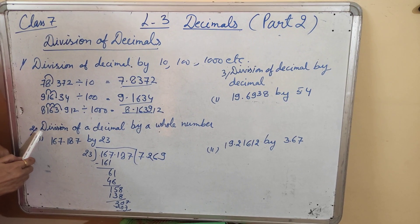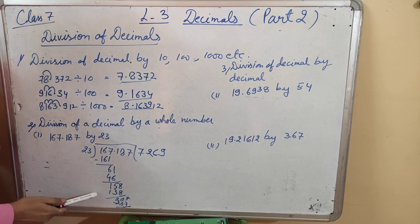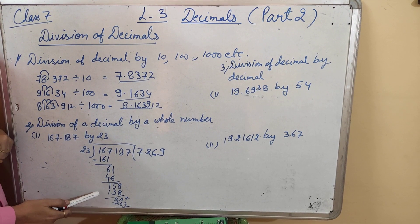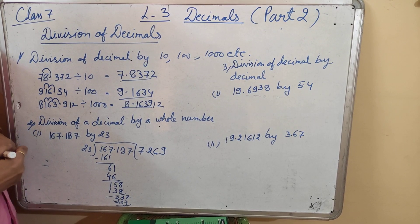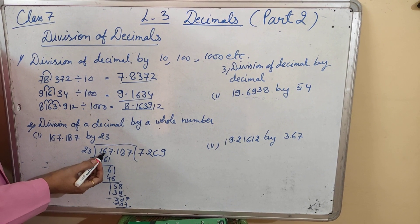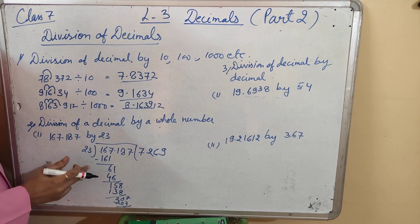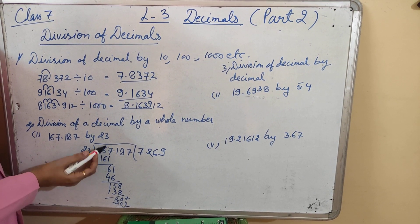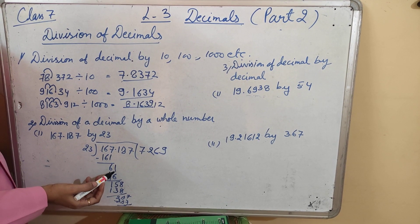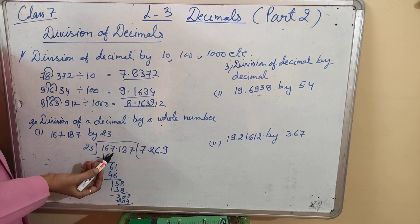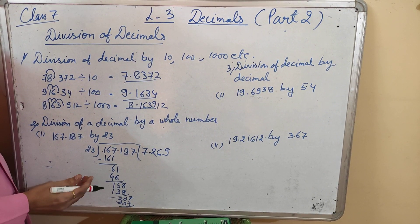The second rule is division of a decimal number by a whole number. Here we have to arrange the numbers in a column method and do the simple division. First, we divide 167 by 23 — it goes 7 times giving 161. After subtraction, 6 remains. Now I have to take the next digit for division, but before that digit there is a decimal, so we have to put the decimal in the quotient also.